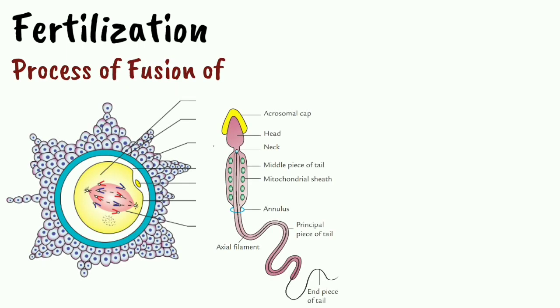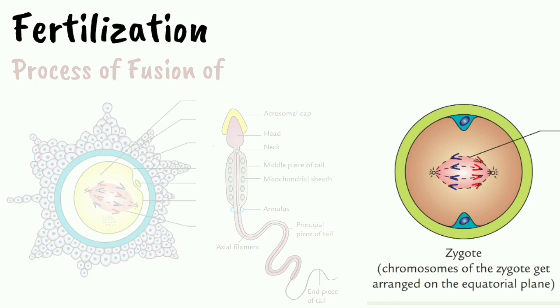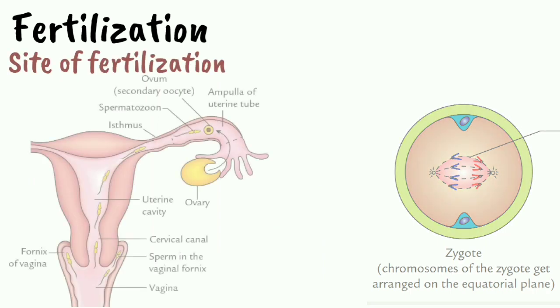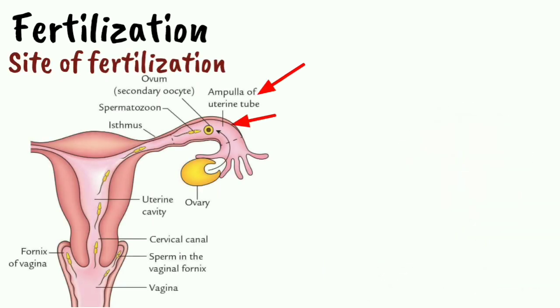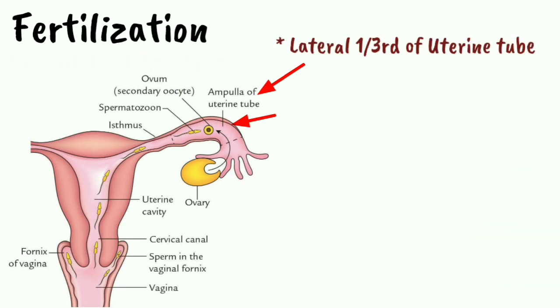Fertilization is the process of fusion of two highly specialized haploid germ cells resulting in the formation of a zygote. The site of fertilization is the ampulla, or the lateral one-third of the uterine tube.